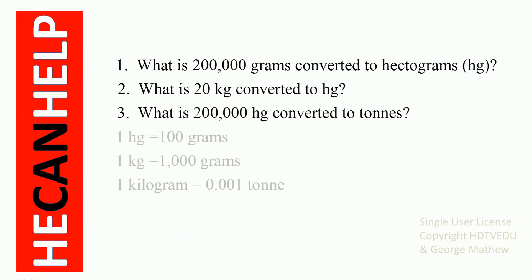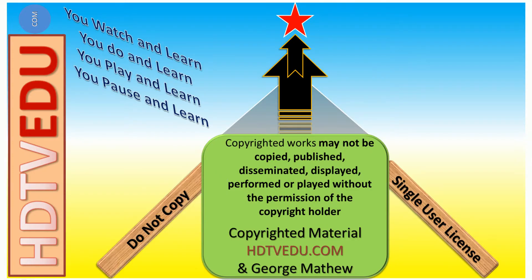Question number one: what is 200,000 grams converted to hectograms (hg)? Number two: what is 20 kg converted to hectograms? Number three: what is 200,000 hectograms converted to tons? We are given that one hectogram equals 100 grams, 1 kg equals 1,000 grams, and 1 kg equals 0.001 tons.